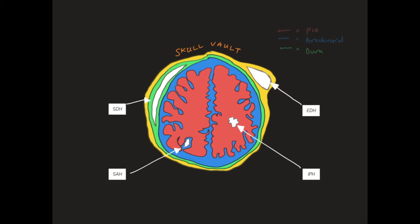Let's start by talking about the different meningeal coverings, the first of which is the pia mater, shown by this red line overlying the cerebrum. The pia mater you should consider is almost like cling film surrounding the brain parenchyma, and for all intents and purposes is inseparable. Haemorrhage that occurs deep to the pia mater is typically intraparenchymal haemorrhage or intraventricular haemorrhage, if it's within the brain parenchyma or ventricular system, respectively.